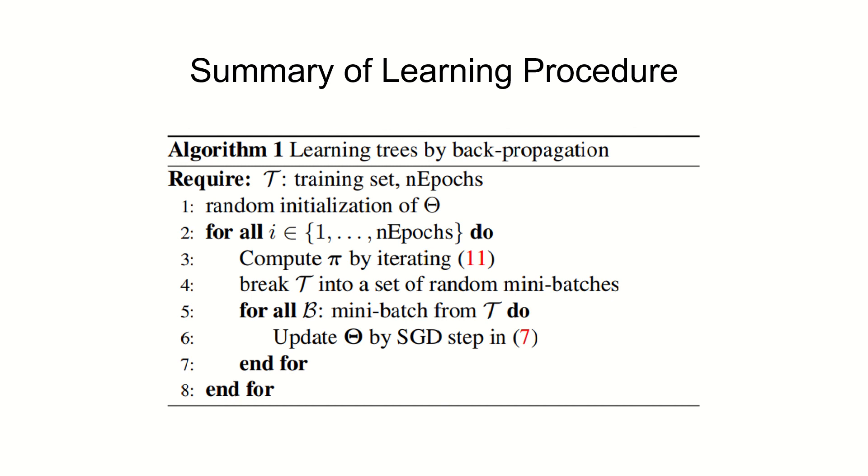We have a training set and number of epochs. We randomly initialize theta and we iteratively compute pi, then break T into random mini batches. For every mini batch we update theta using SGD. We do this for n epochs.